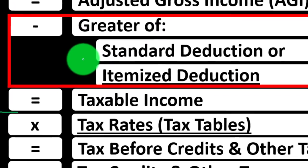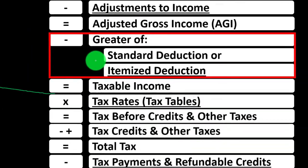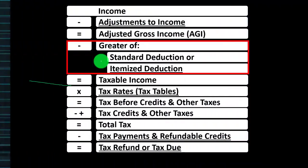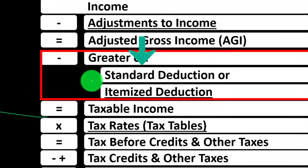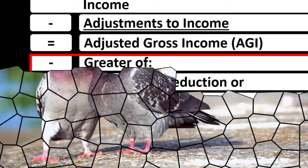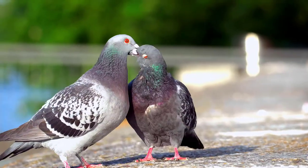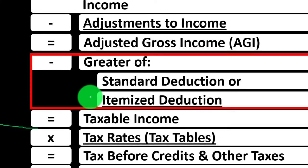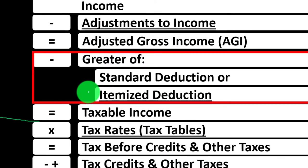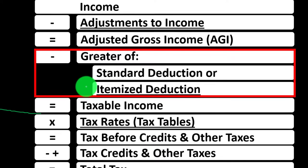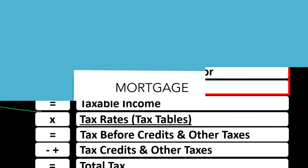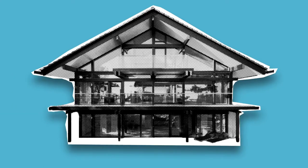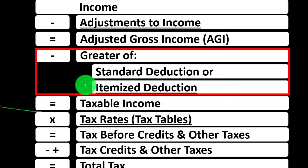The rationale for increasing the standard deduction was to try to simplify the code. If everyone just took a standard deduction based on filing status and a couple of other things, that would make the tax return a lot easier. The itemized deductions are usually going to benefit people who are more well-off, because they're going to have more things that fall into that category — some of the largest being things like mortgage interest and property tax on the home.